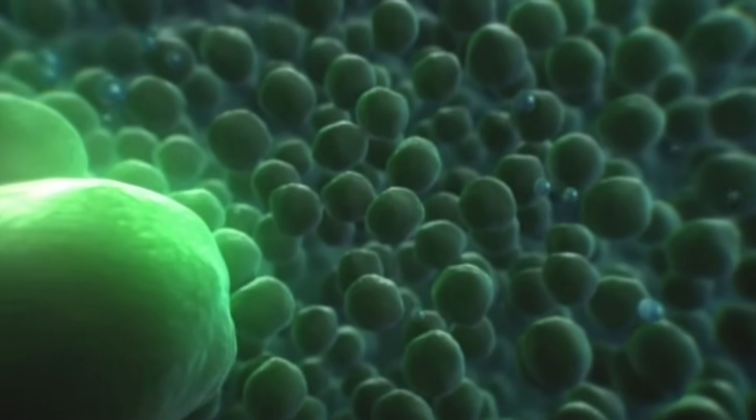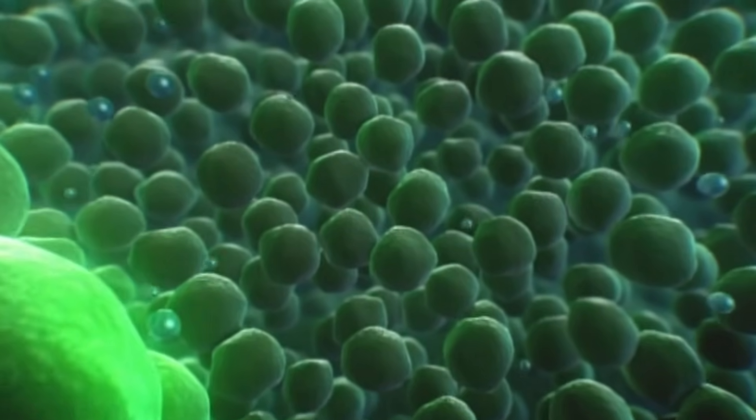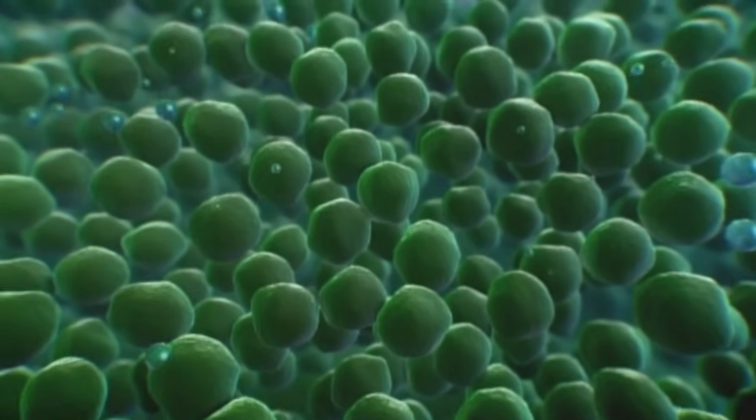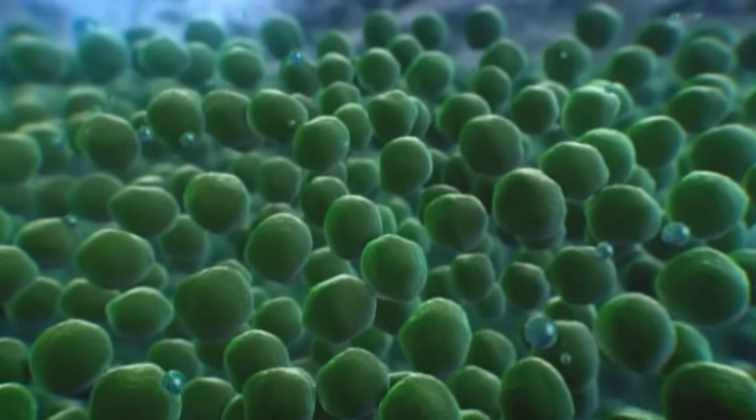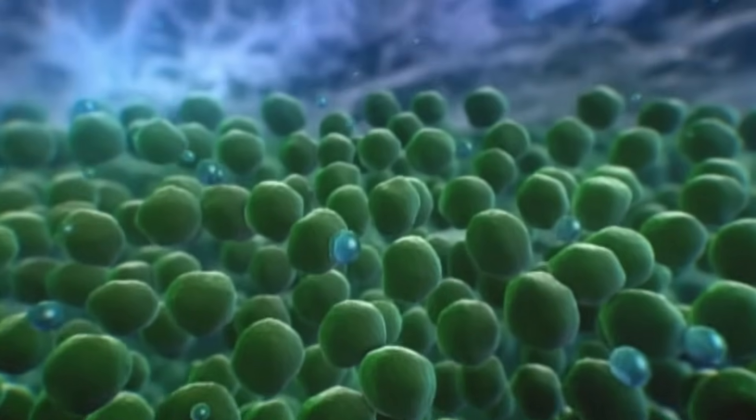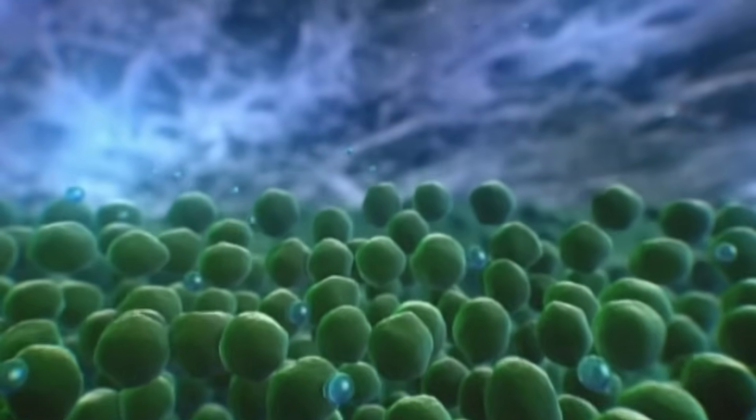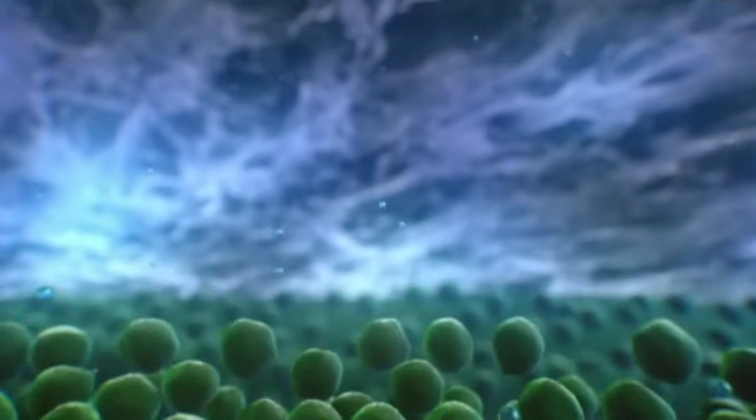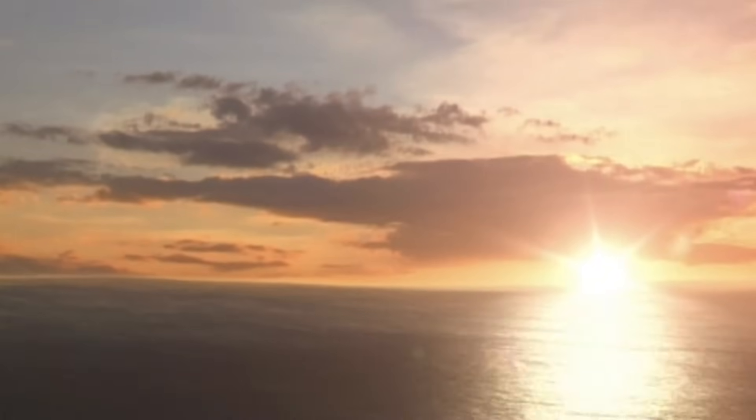One species of bacteria mutates to extract energy from sunlight. They've been pumping out a by-product, a gas called oxygen. It fills the oceans and the atmosphere and makes our evolution possible.